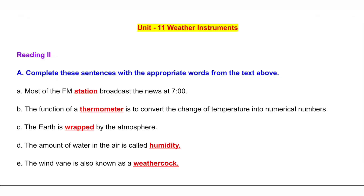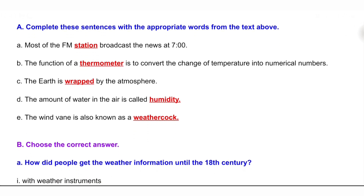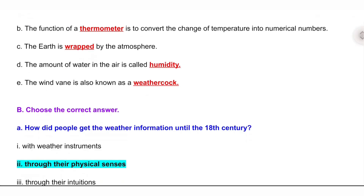Unit 11: Weather Instruments, Reading 2. Complete these sentences with the appropriate words from the text. A: Most of the FM stations broadcast the news at 7 o'clock. B: The function of a thermometer is to convert the change of temperature into numerical numbers. C: The earth is wrapped by the atmosphere. D: The amount of water in the air is called humidity. E: The wind vane is also known as a weathercock.